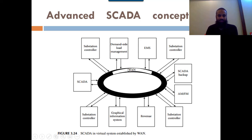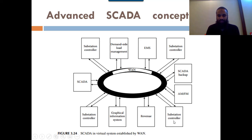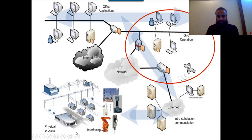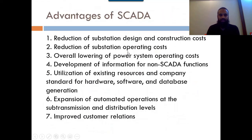An advanced SCADA system is internet-based, connecting multiple components: SCADA, substation control, demand-side load management, energy management systems, SCADA backup, AM/FM, wireless communication, substation controller, revenue systems, and geographic information systems. All this information is connected via the internet and accessible from anywhere in the world. The power system connects through Ethernet or servers to the main grid or central office, from where the whole system can be operated.